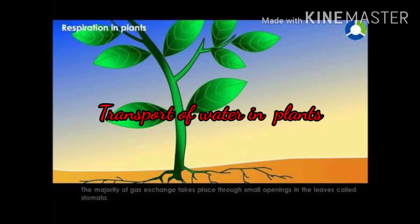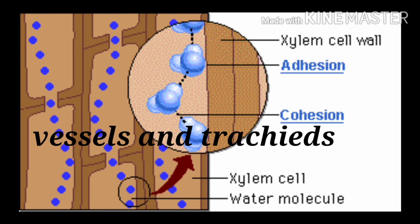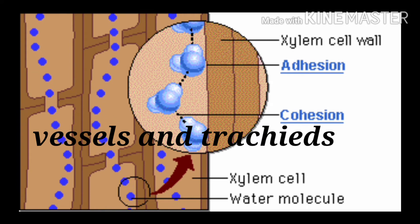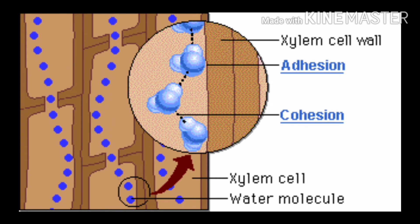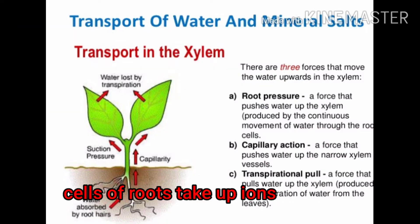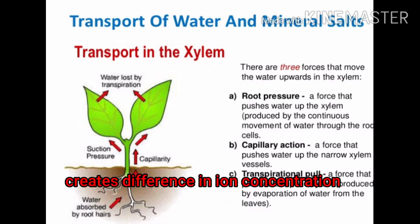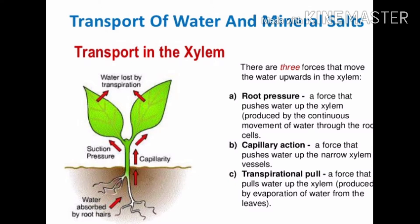Let us start with transport of water in xylem tissue. Vessels and tracheids of the roots, stems and leaves are interconnected to form a continuous system of water-conducting channels reaching all parts of the plant. At the roots, cells in contact with the soil actively take up ions. This creates a difference in concentration of these ions between the root and the soil, so water moves into the root from the soil, creating a column of water that is steadily pushed upwards.